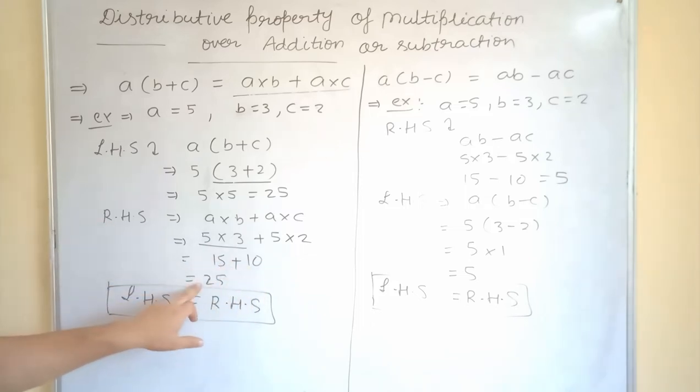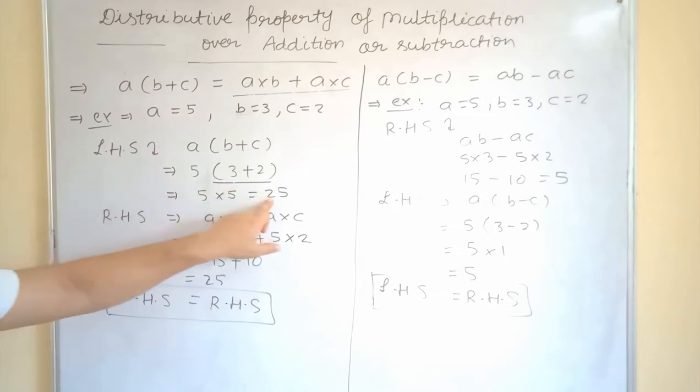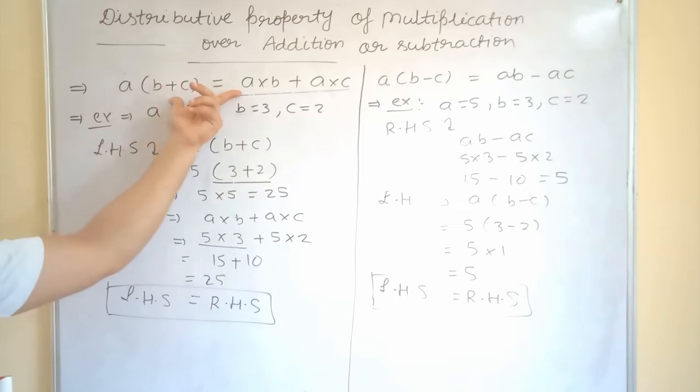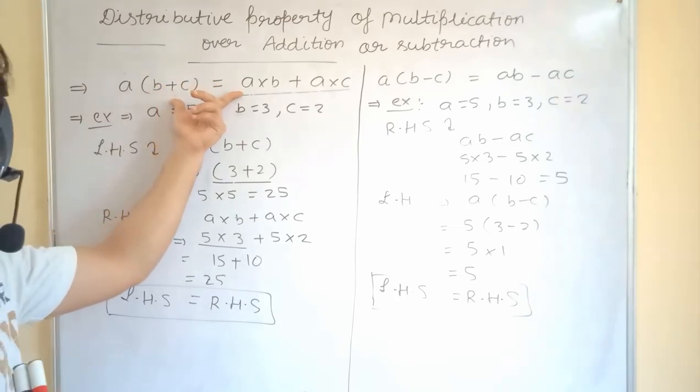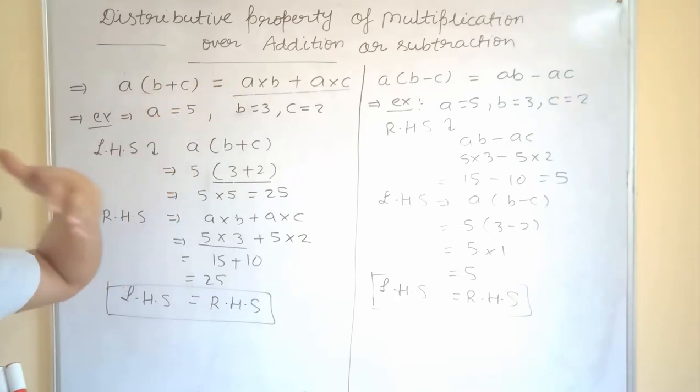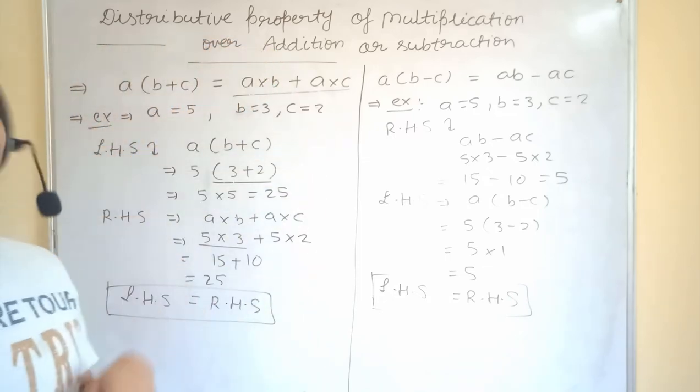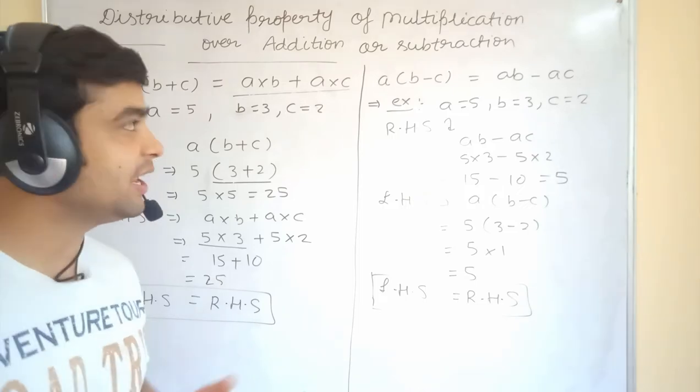So, 25 RHS is coming and LHS was also coming 25. So, both are equal. It means this property is true and you can apply anywhere. So, this is the identity of integer only, distributive property of multiplication over addition and subtraction. I hope you are getting it.